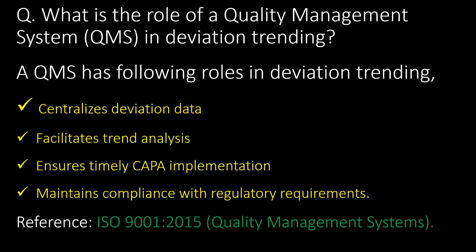What is the role of a Quality Management System (QMS) in deviation trending? A QMS has the following roles: centralizes deviation data, facilitates trend analysis, ensures timely CAPA implementation, and maintains compliance with regulatory requirements. Reference: ISO 9001:2015.